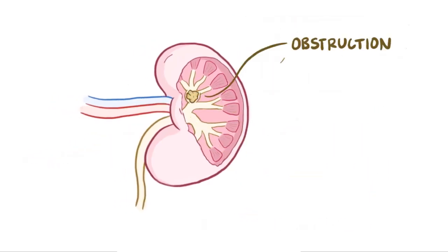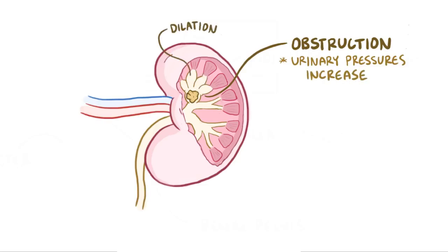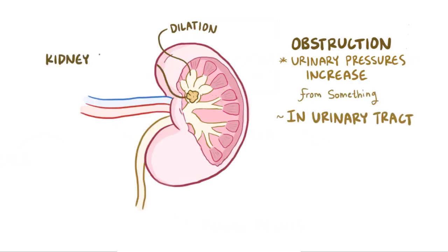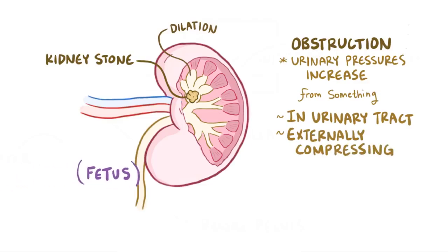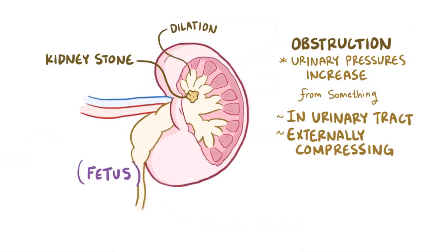If there's an obstruction to this normal flow of urine, it can cause urinary pressures to increase and push on the walls of these structures, making them dilate. This might happen because of something within the urinary tract — for example, a kidney stone — or from external compression, for example when a fetus pushes up against the urinary tract during pregnancy. Typically, the dilation starts closest to the site of the problem and then slowly continues back up towards the kidneys.